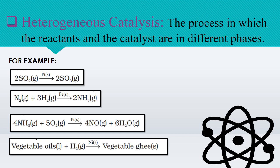Other examples of heterogeneous catalysis: production of ammonia by Haber's process using N₂ gas and H₂ gas with iron as a solid catalyst; oxidation of ammonia to nitric oxide in the presence of platinum gauze as given by the Oswald process; and hydrogenation of vegetable oil in the presence of finely divided nickel as a catalyst to convert vegetable oil into vegetable ghee.